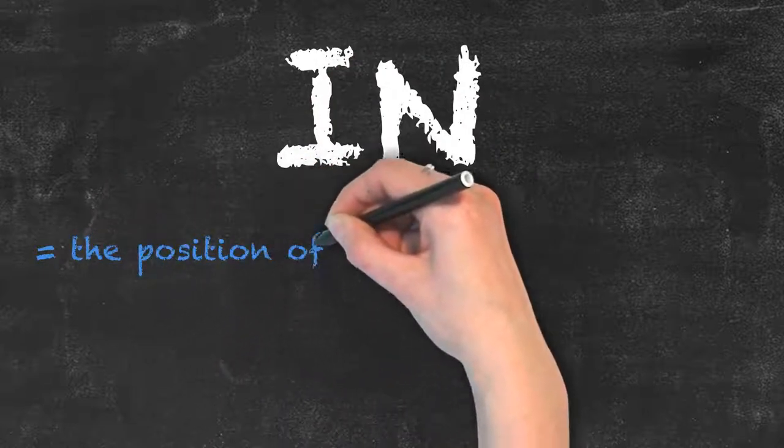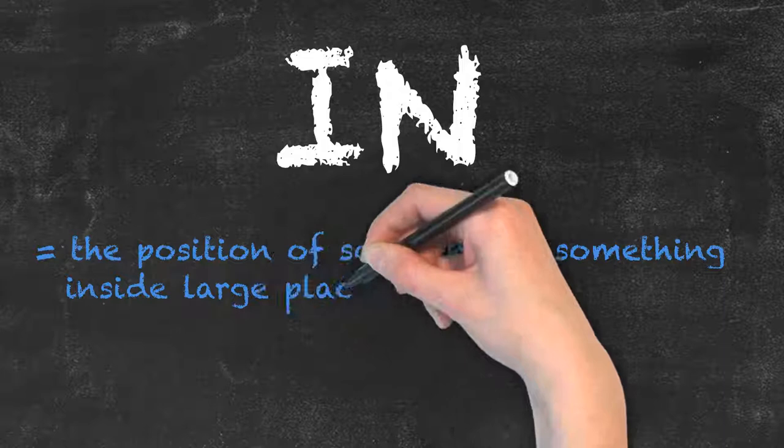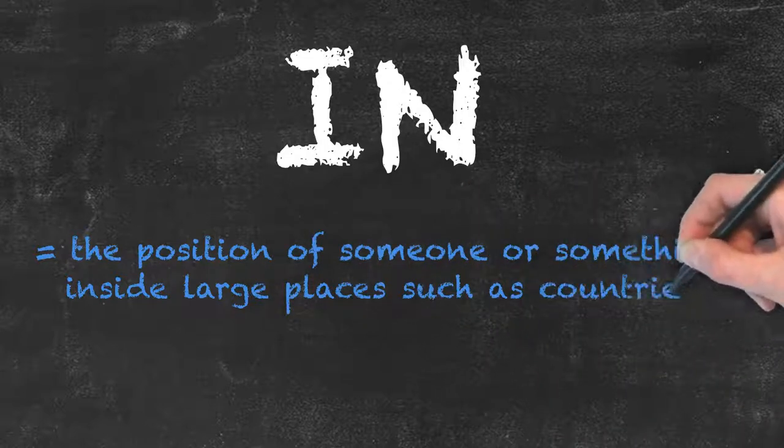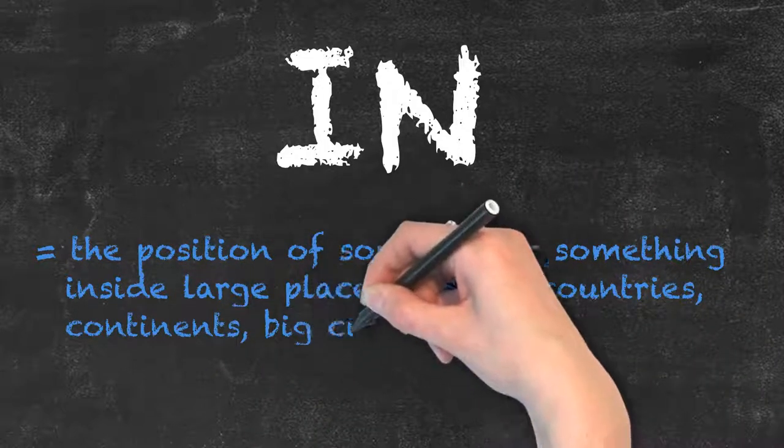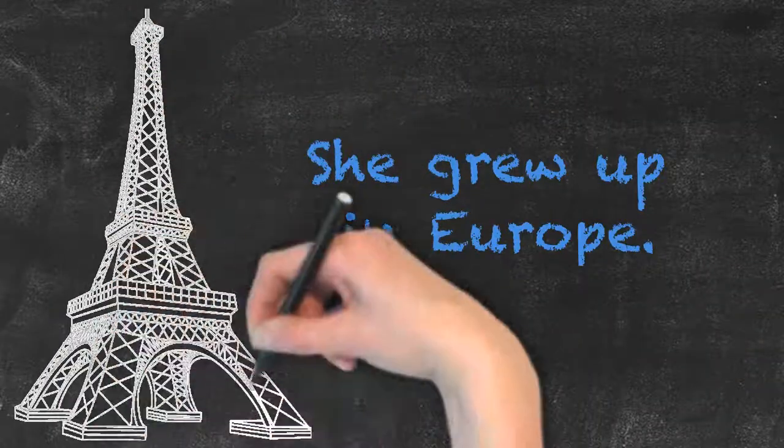As a preposition of place, in is usually used to talk about the position of someone or something inside large places such as countries, continents, big cities and similar. For example, she grew up in Europe.